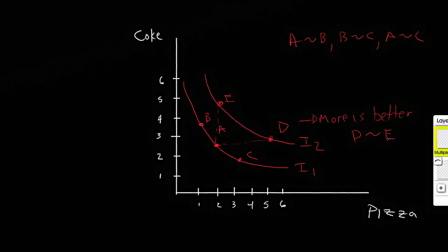And because the bundle A is indifferent between B and C, then E and D are preferred to B and C or any other point on this indifference curve I1. So that a higher indifference curve generally leads to a higher level of satisfaction. And that shows this more is better.